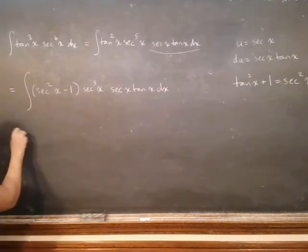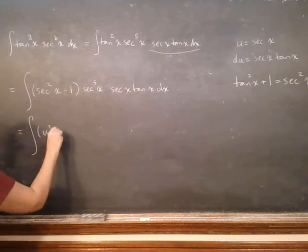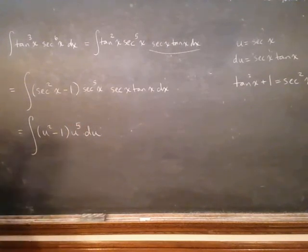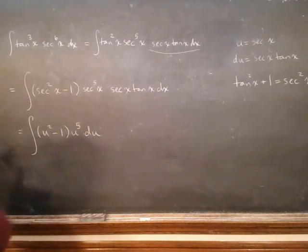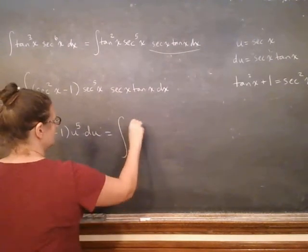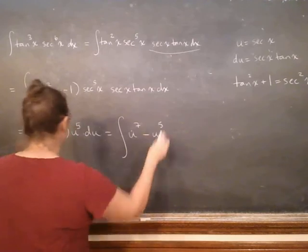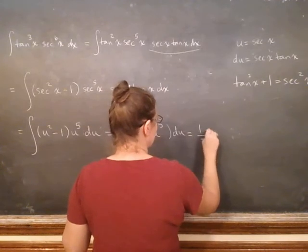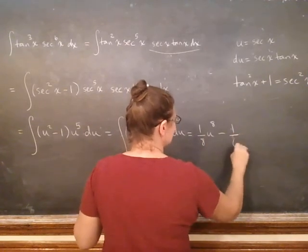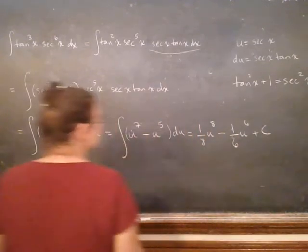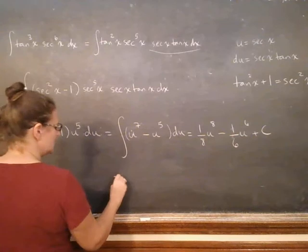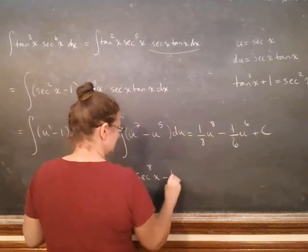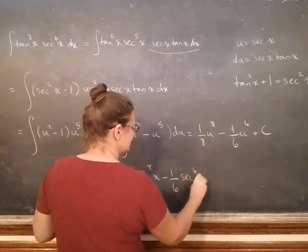So when I make my substitution, I'm going to do u squared minus 1 times u to the 5 du. So then we have u to the 7 minus u to the 5. So if I integrate this, I've got 1/8 u to the 8 minus 1/6 u to the 6. And then if I put back in what u is, I'm going to have my answer: 1/8 secant to the 8 minus 1/6 secant to the 6 plus C.